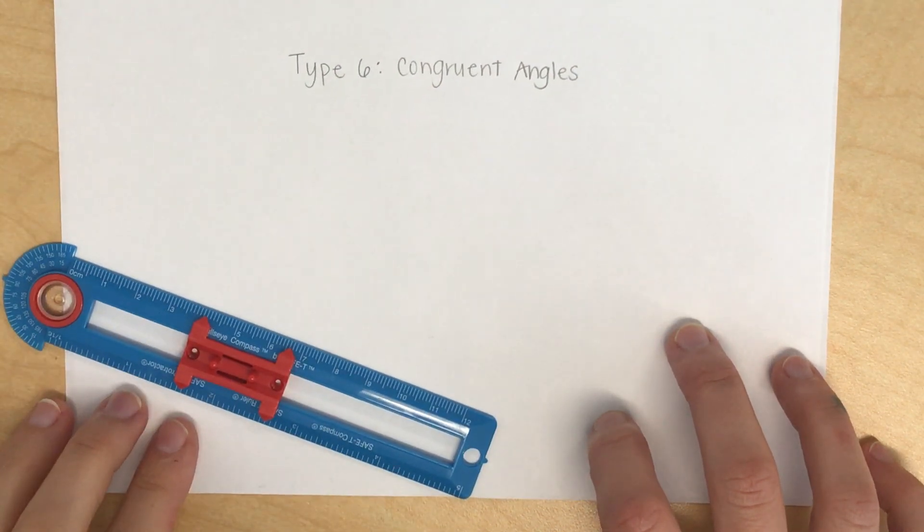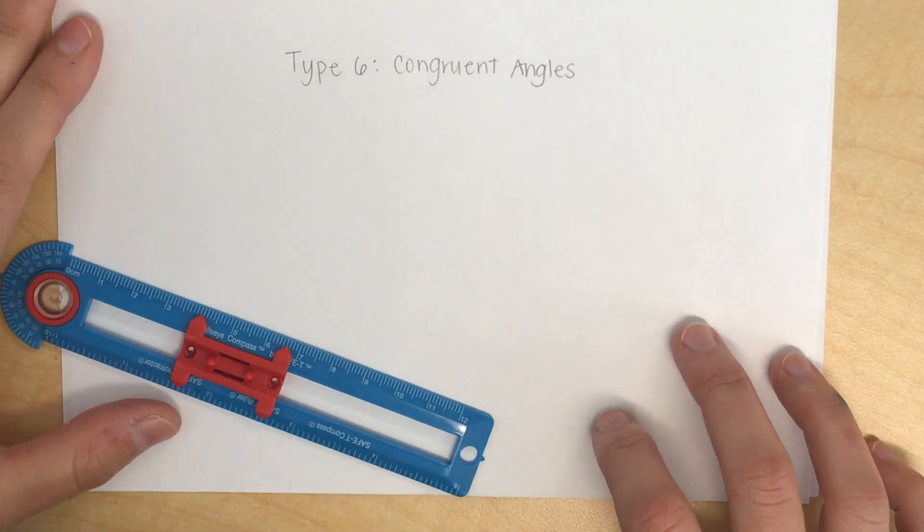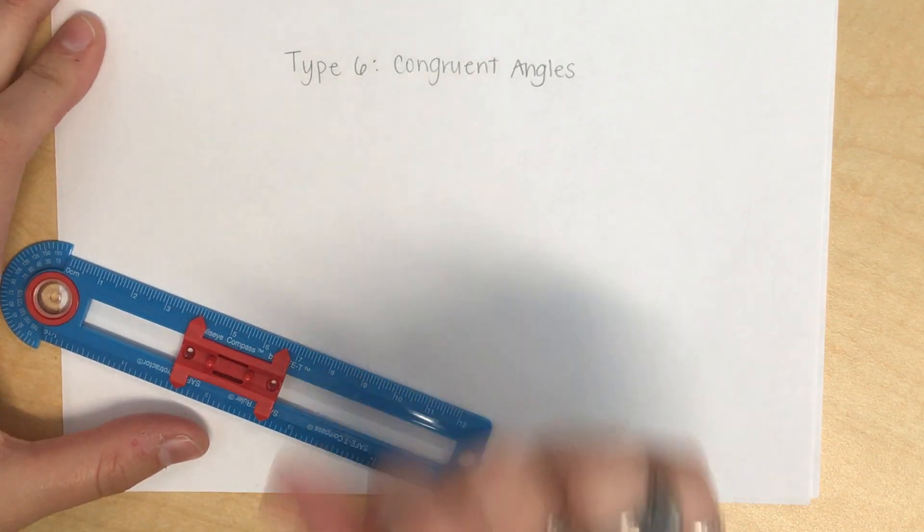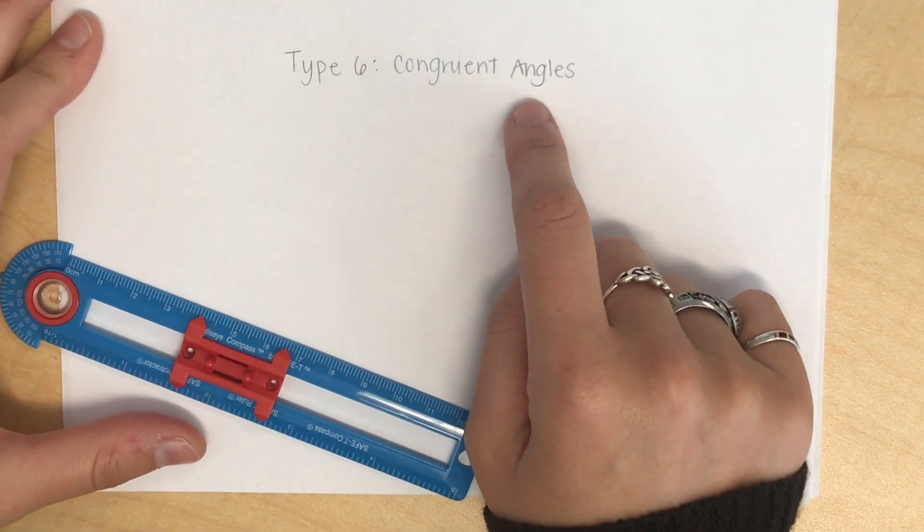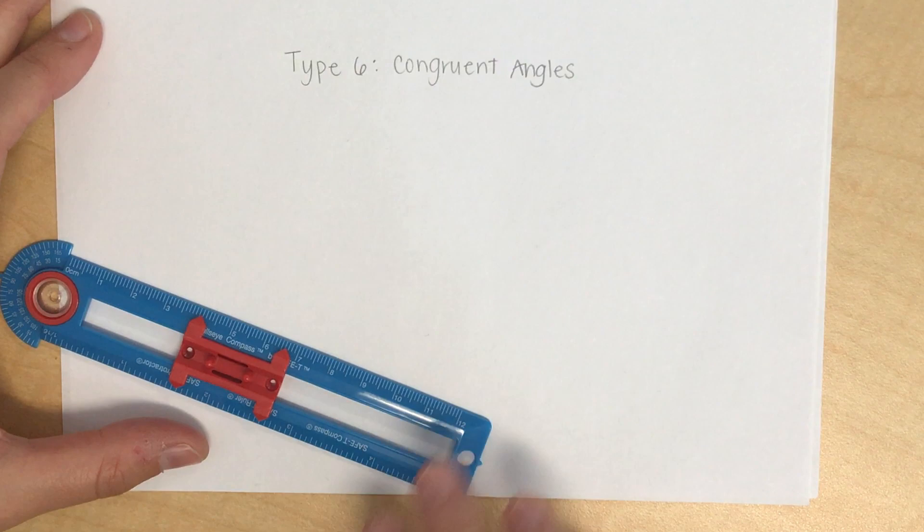We are now going to go on to our sixth and final type of construction, which is constructing congruent angles. So two angles that are the exact same size, exact same shape.